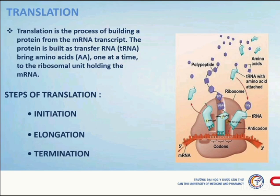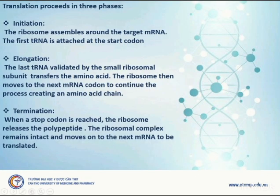Translation. Translation is the process of building a protein from the mRNA transcript. The protein is built as transfer RNA brings amino acids one at a time to the ribosome holding the mRNA. Translation proceeds in three phases. Initiation: the ribosome assembles around the target mRNA and the first tRNA is attached at the start codon. Elongation: the tRNA validated by the small ribosomal subunit transfers the amino acid, then the ribosome moves to the next mRNA codon, creating an amino acid chain. Termination: when a stop codon is reached, the ribosome releases the polypeptide, and the ribosomal complex moves on to the next mRNA to be translated.